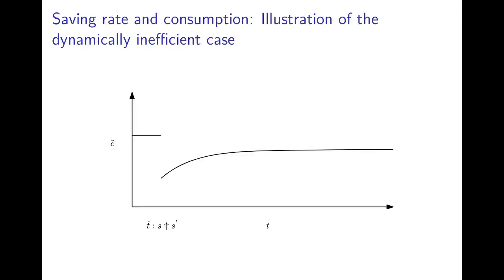By contrast, in the dynamically inefficient case the saving rate is already high at the steady state. If the saving rate is then raised further from s to s prime, there is a short-run sacrifice in consumption and also a long-run sacrifice in consumption. The increase in the saving rate leads to more capital depreciation and capital dilution than can be produced additionally from the higher saving rate. Therefore the economy loses out in the short run and in the long run - it is dynamically inefficient and could increase welfare by reducing the saving rate.